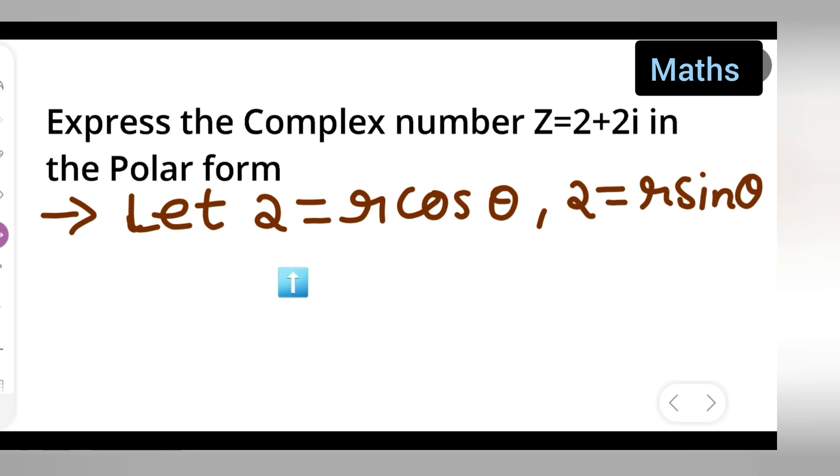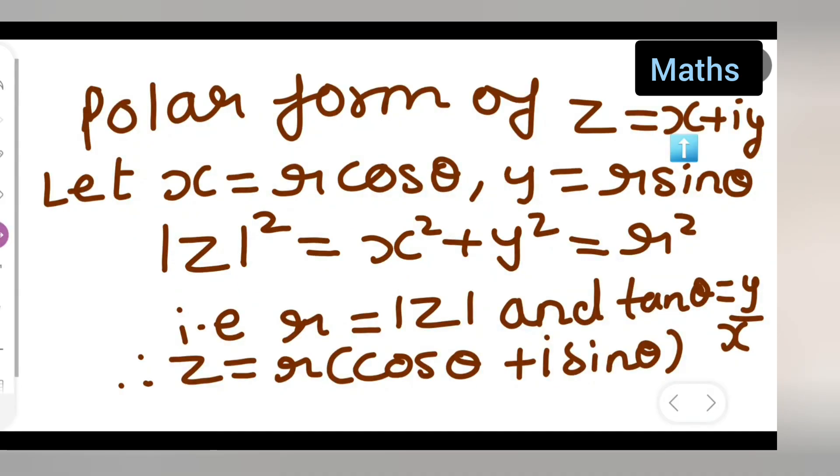So now next step, r is equal to mod of z which is equal to root of, now what you'll have to do is take the square root on both sides, this 2 will get cancelled.